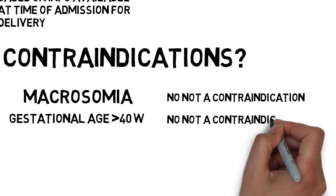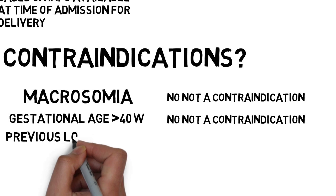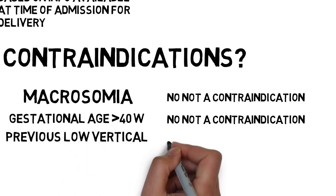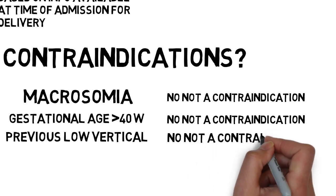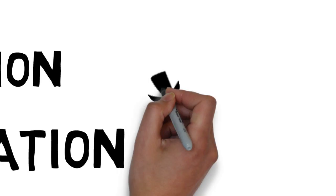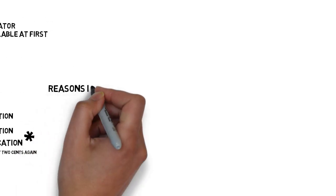How about previous low vertical incision? There aren't good data suggesting that uterine rupture is higher, so the bulletin says. That said, here's my two cents. The reason I don't like doing TOLACs with a previous low vertical are two.